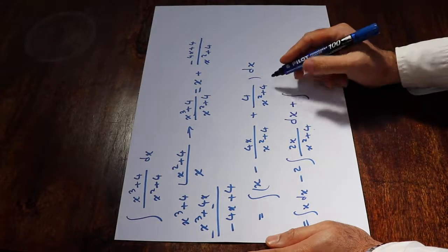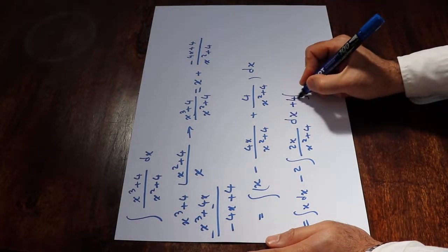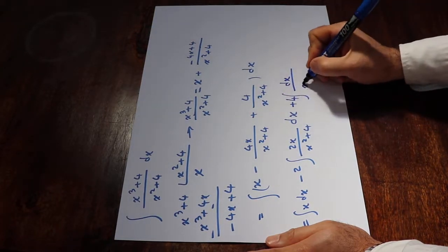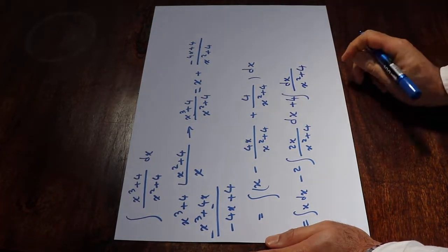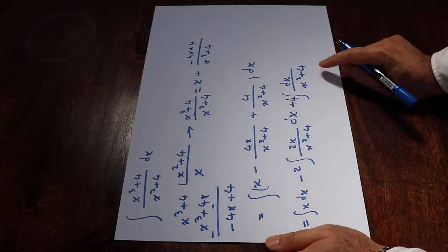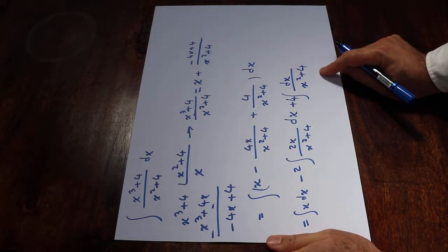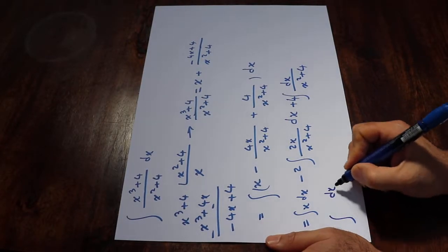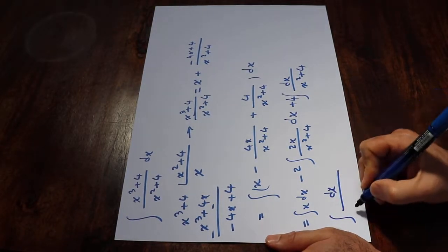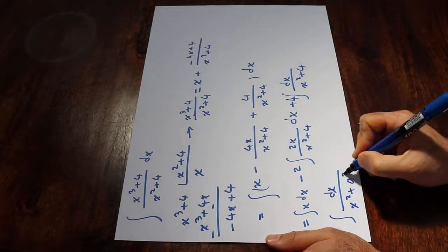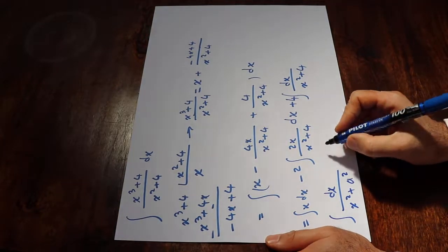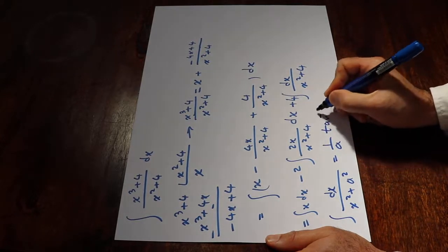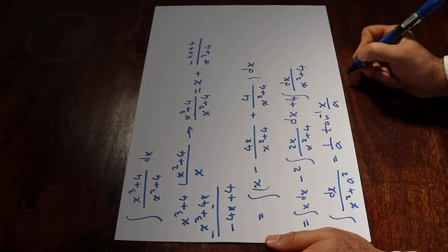The last term is the integral of 4 — since 4 is a constant I can take it outside — giving 4 times the integral of dx over x² plus 4. To finalize this, you need one formula from the table of integrals: the integral of dx over x² plus a² equals 1 over a times arctan(x over a).